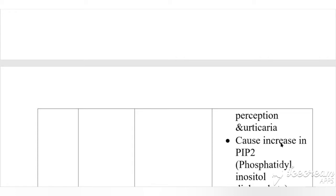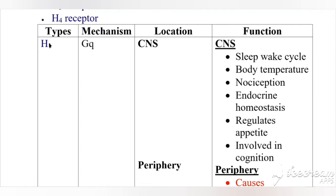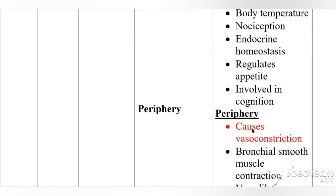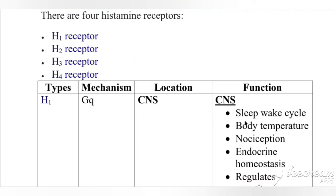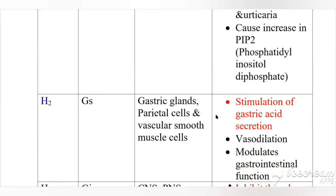The H1 receptor causes an increase in PIP2 (phosphatidylinositol diphosphate). To summarize, H1 is coupled with the Gq protein, present in the CNS and periphery, with vasoconstriction as its main role. Nociception refers to the sensory nervous system's response to harmful stimuli.